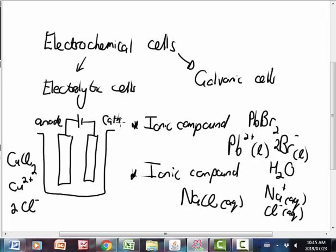The anode is where oxidation occurs. An easy way to remember that is that both oxidation and anode start with vowels. At the cathode, we know that reduction will occur. Both of them start with a consonant. So keep that in mind.